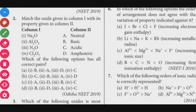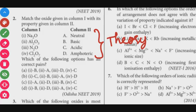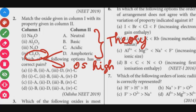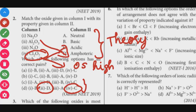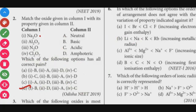Next, question number 2: Match the oxide. This is a completely theory-based question. NO2 is an acidic oxide. Al2O3 is an amphoteric oxide. Na2O (sodium oxide) is basic. N2O is neutral. So in the match the following, option D is the correct answer: Na2O — basic, Al2O3 — amphoteric, N2O — neutral, Cl2O7 — acidic.